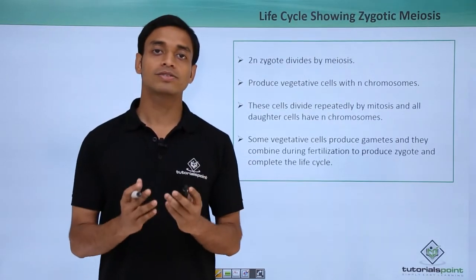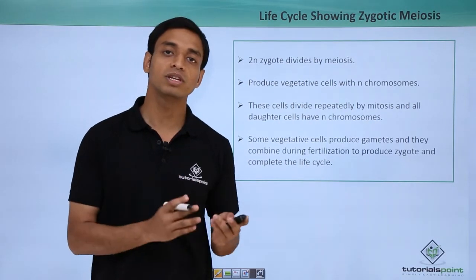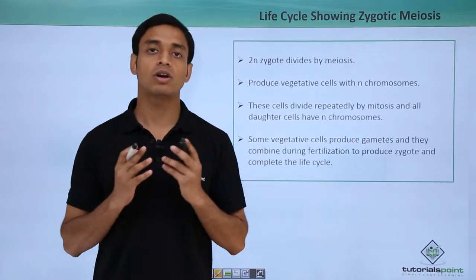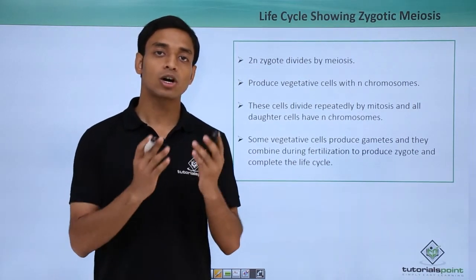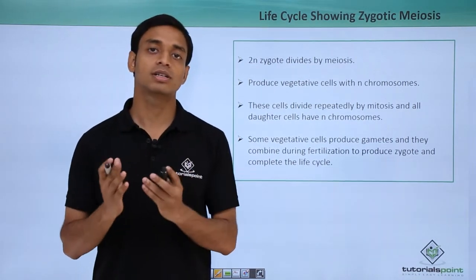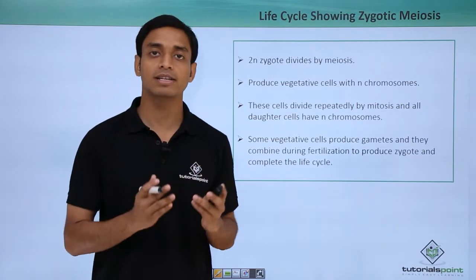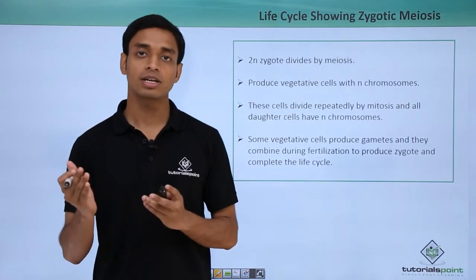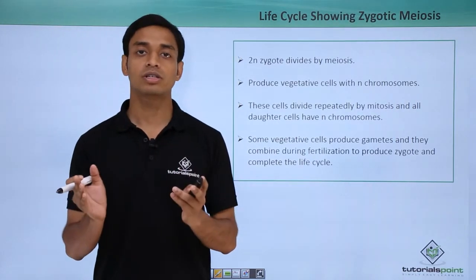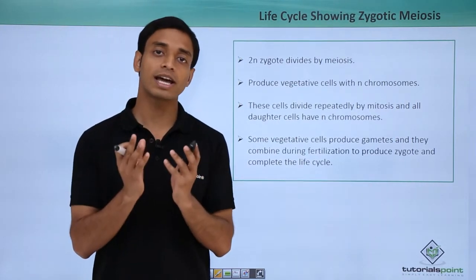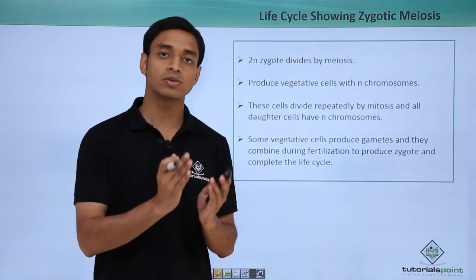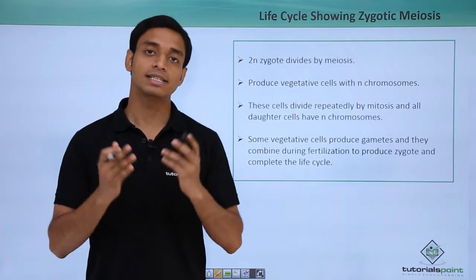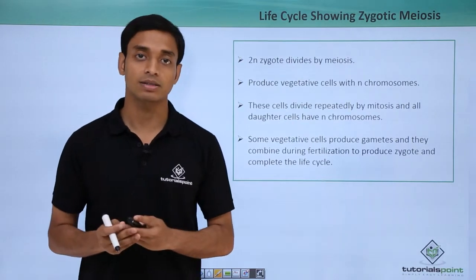First of all let us try to understand what we mean by life cycle. A life cycle for a particular organism means all the sequence of events performed by that organism before its next generation. So between two generations, if a particular organism performs some sequence of events, this span of time is basically considered as the life cycle.